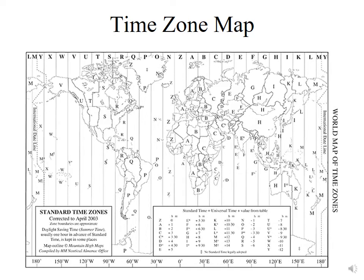As you move eastward away from the prime meridian, the time zones have designations of A, B, C, D, E, F, and so on. On the western side of the prime meridian, we have the time zones seen here in the United States: time zone U being the Pacific time zone, T being the Mountain, S being the Central, and R being the Eastern time zone. Since we're in time zone T, we're seven hours behind the time in Greenwich, England.